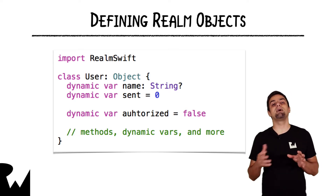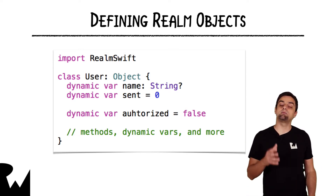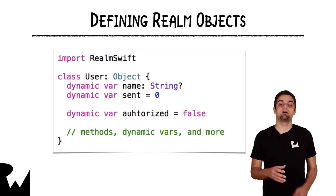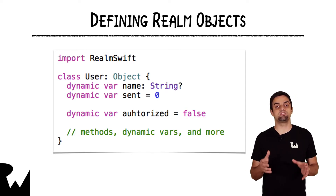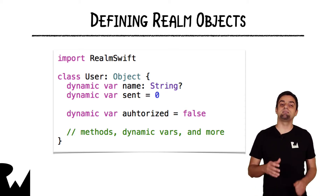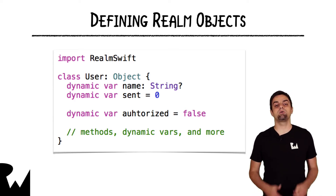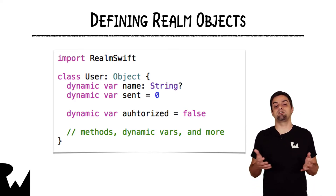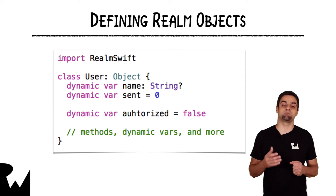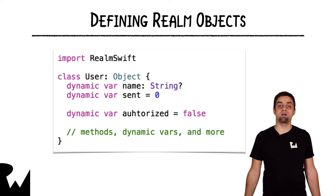That already tells Realm enough so it knows what kind of structure to create on disk in your file so that you can store your data in there. So your code is the only source of truth about your database schema. Inheriting from Object already adds the ability to be persistent on disk and read back transparently, so you don't need to add any methods to do that. You focus on adding the data properties that you want persisted, and you can provide default values or have optional properties which will be nil by default.